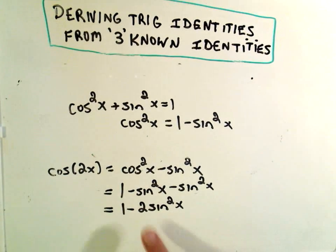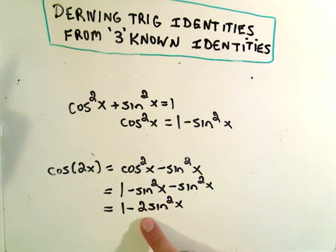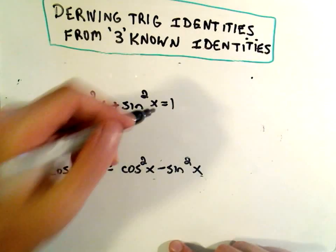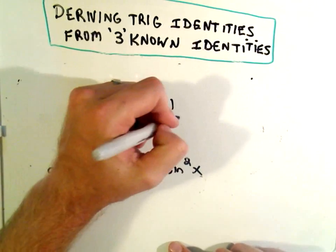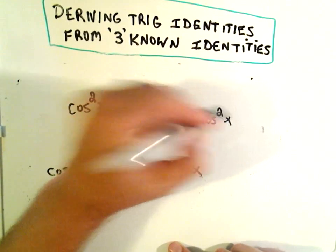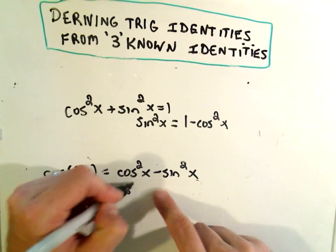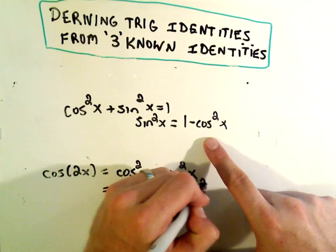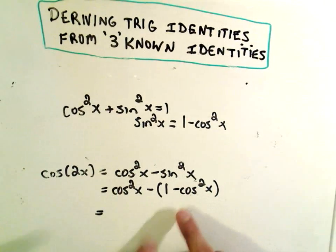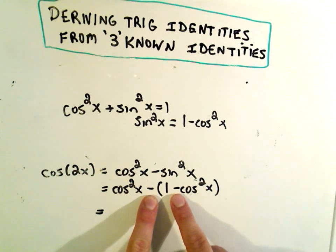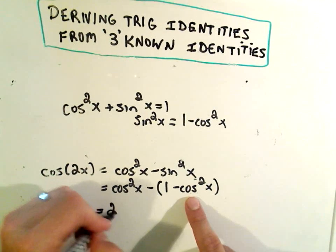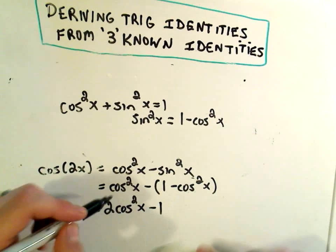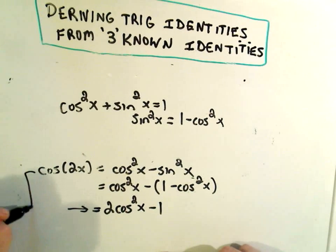So that's another trig identity for cosine of 2x that you'll want to know. We can do the exact same thing. Instead of solving for cosine squared, we can solve for sine squared and make that 1 minus cosine squared x. And now we'll get cosine squared x minus, put it in parentheses, 1 minus cosine squared x. When you distribute the negative, you'll get a positive cosine squared, so you'll actually have 2 cosine squared x minus 1. So another trig identity for cosine of 2x.